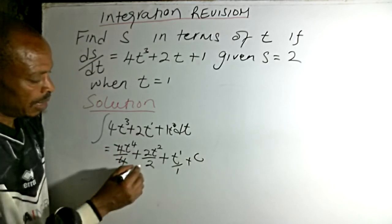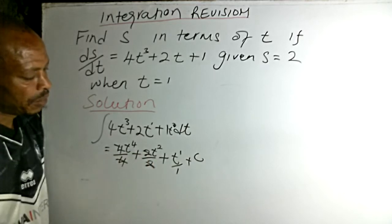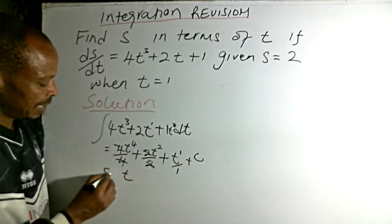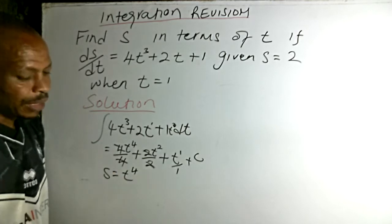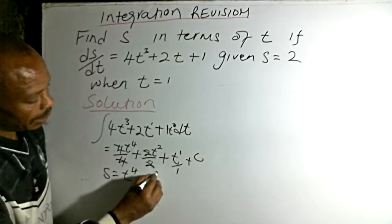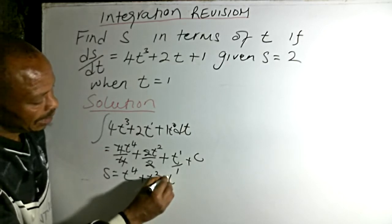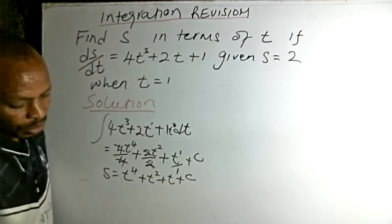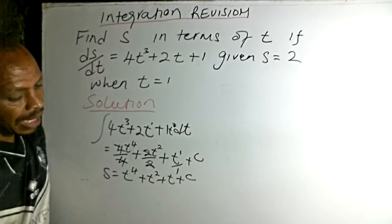The expression you get is: 4 divided by 4 is 1, so our expression of s equals t to power 4 plus t² plus t plus c. That is our expression.